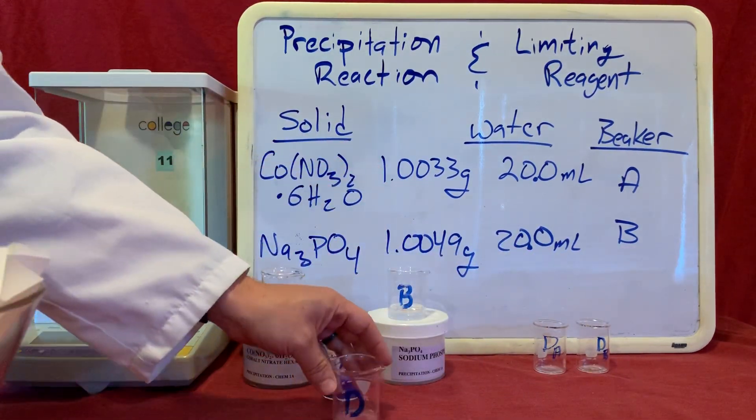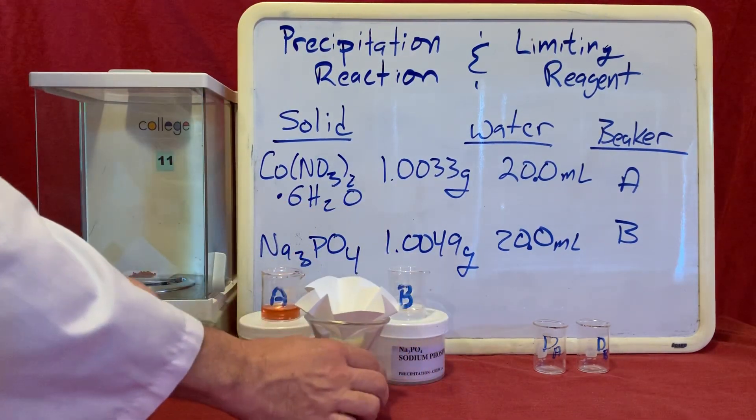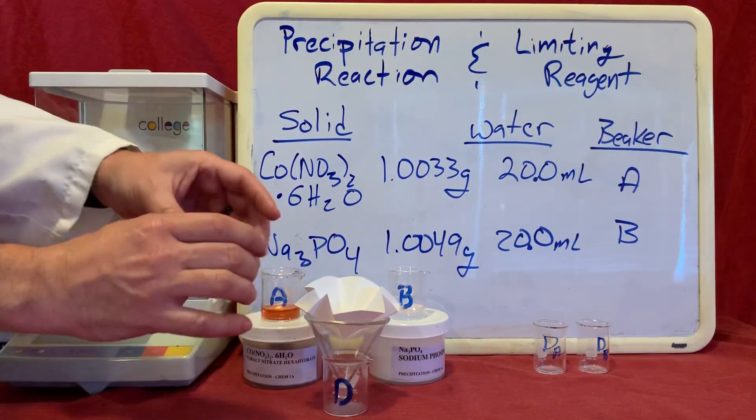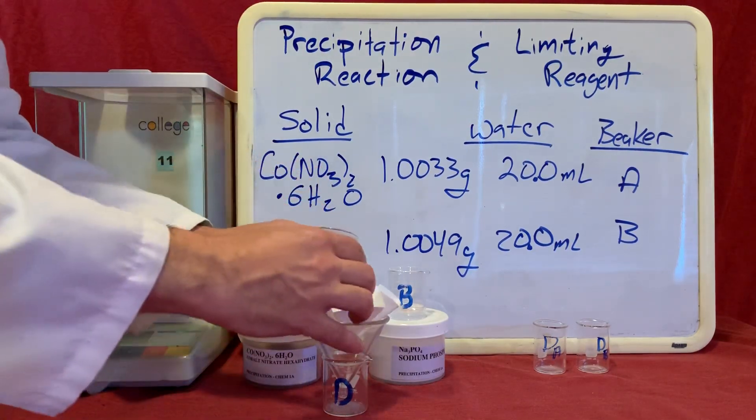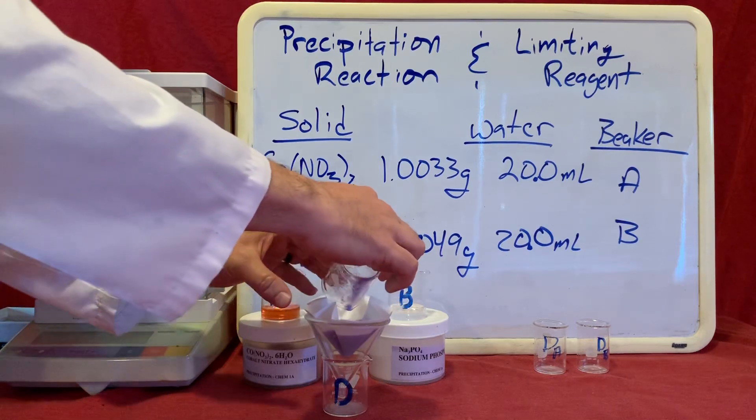Beaker D is going to collect our supernatant, the liquid portion of our mixture. So I'm just going to take beaker C and pour it into my filter paper.